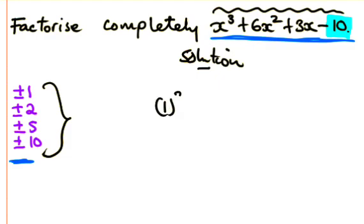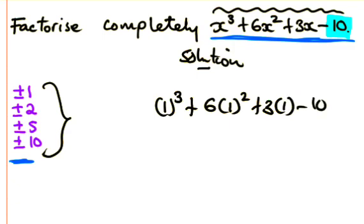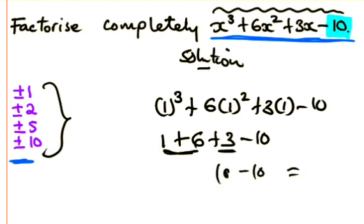Let's test x equals 1. We have 1 cubed plus 6 times 1 squared plus 3 times 1 minus 10, which equals 1 plus 6 plus 3 minus 10, which equals 0.